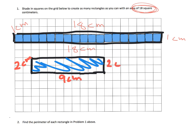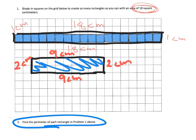If you don't believe me, pause the video and count the squares inside. This rectangle is 2 centimeters tall and 9 centimeters wide. We need to find its perimeter: 9 plus 2 is 11, and we have another 11 on the opposite sides, so 11 times 2 gives us a perimeter of 22 centimeters.